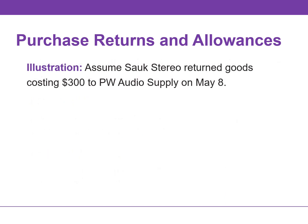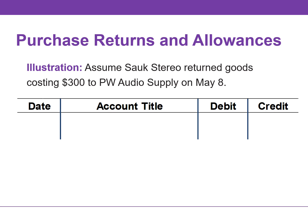Let's assume that Salk Stereo returned goods costing $300 to PW Audio Supply on May 8th. Salk would record the following entry: debit accounts payable for $300 and credit inventory for the same amount. When dealing with a purchase return or allowance, go back to the original entry and simply reverse it. Because Salk Stereo increased inventory when the goods were received, inventory is decreased when Salk Stereo returns the goods.